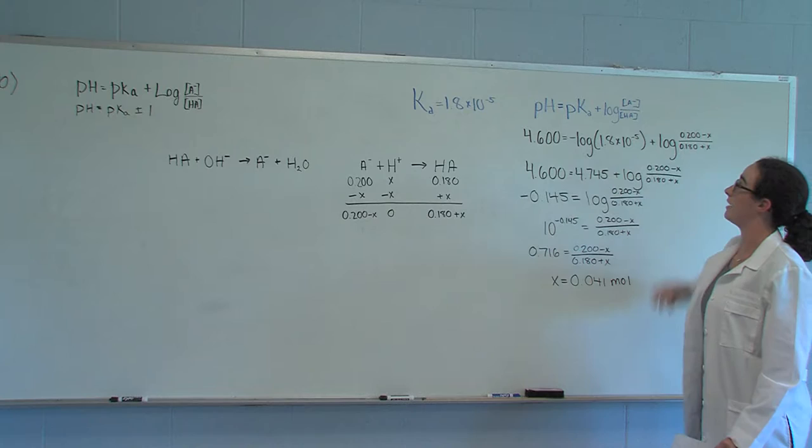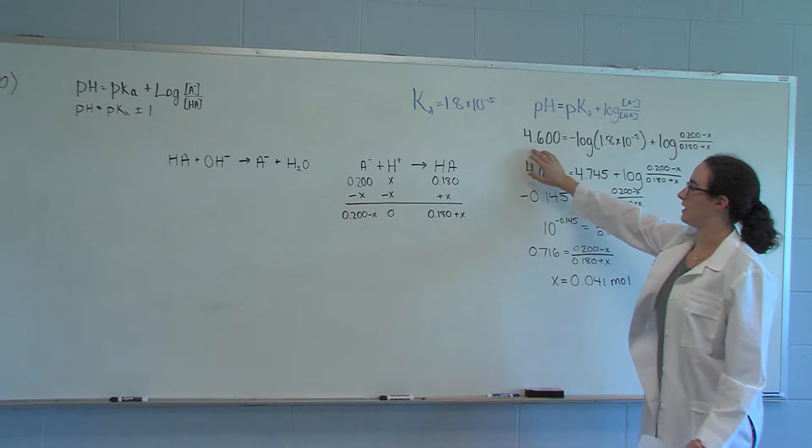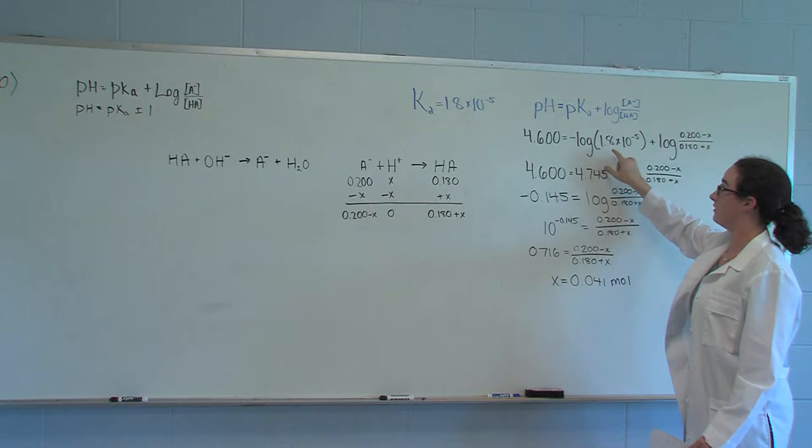We're going to use the equation pH equals pKa plus the log of A minus over HA. The pH that we're trying to get in this problem is 4.600, and we can use the opposite log of the Ka, which would be 4.745.